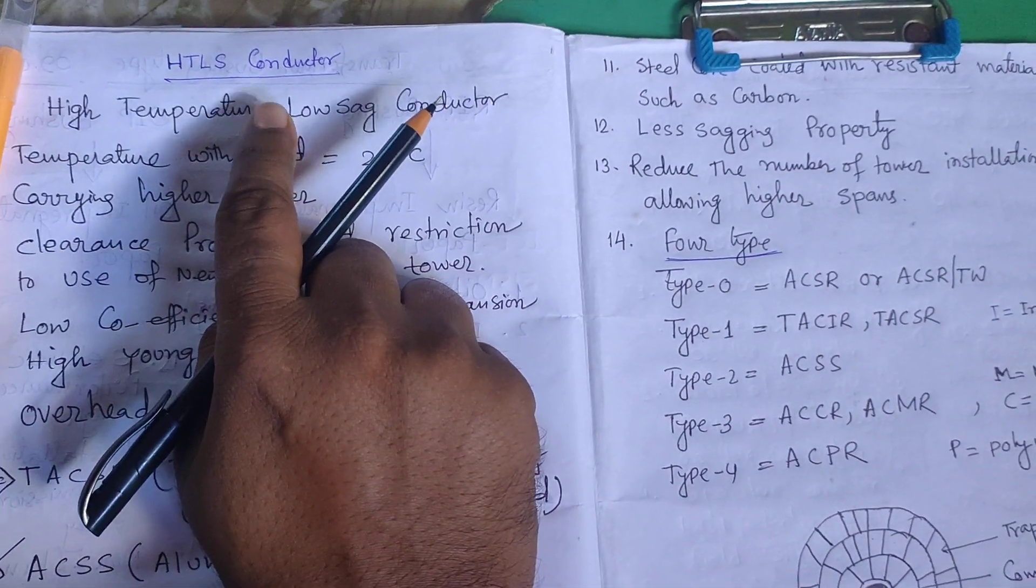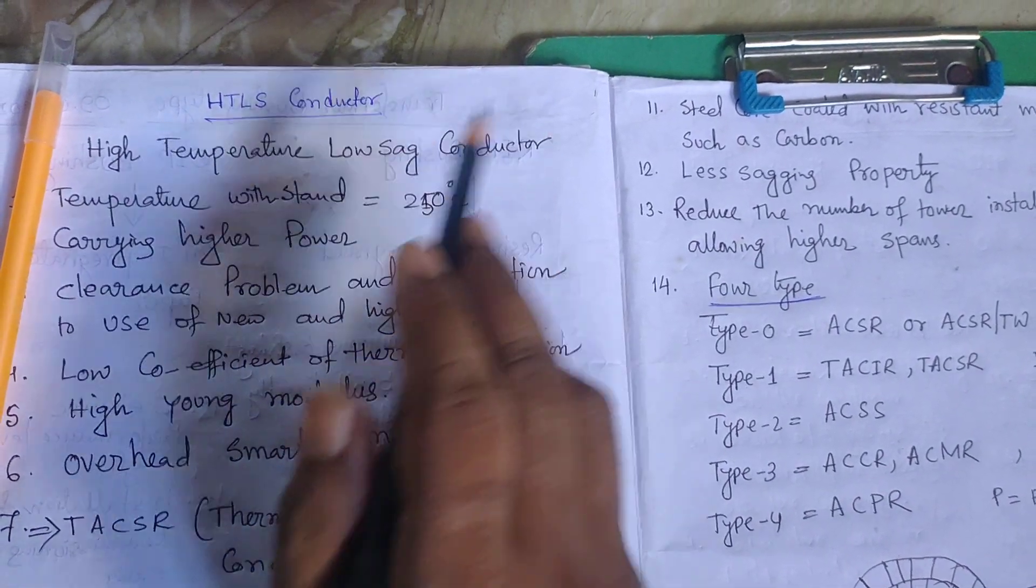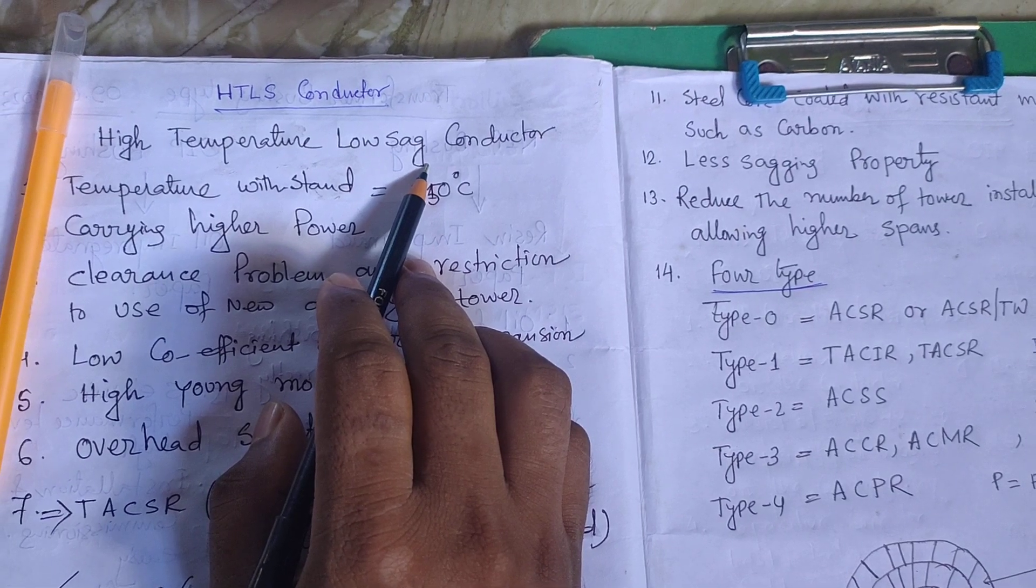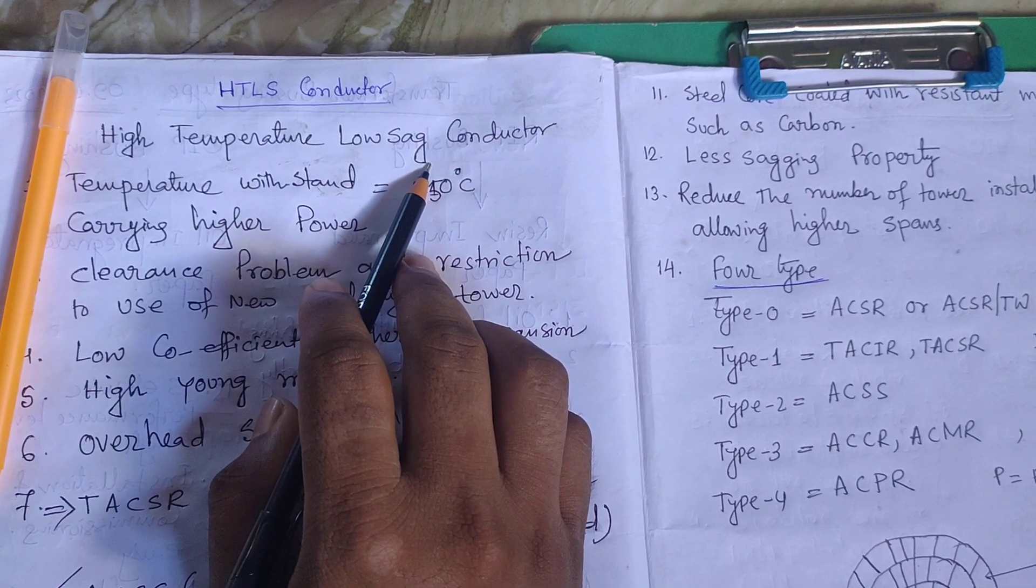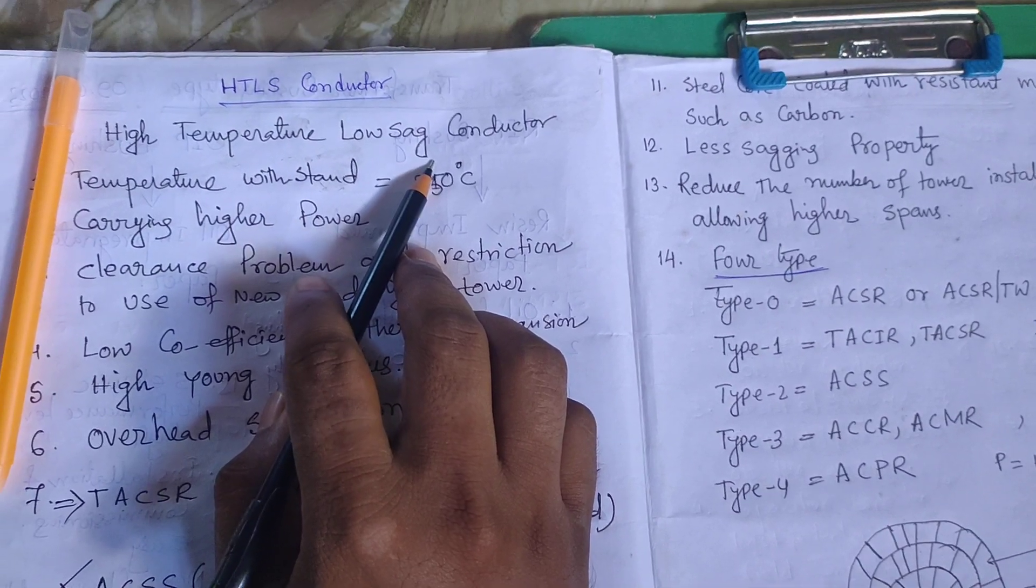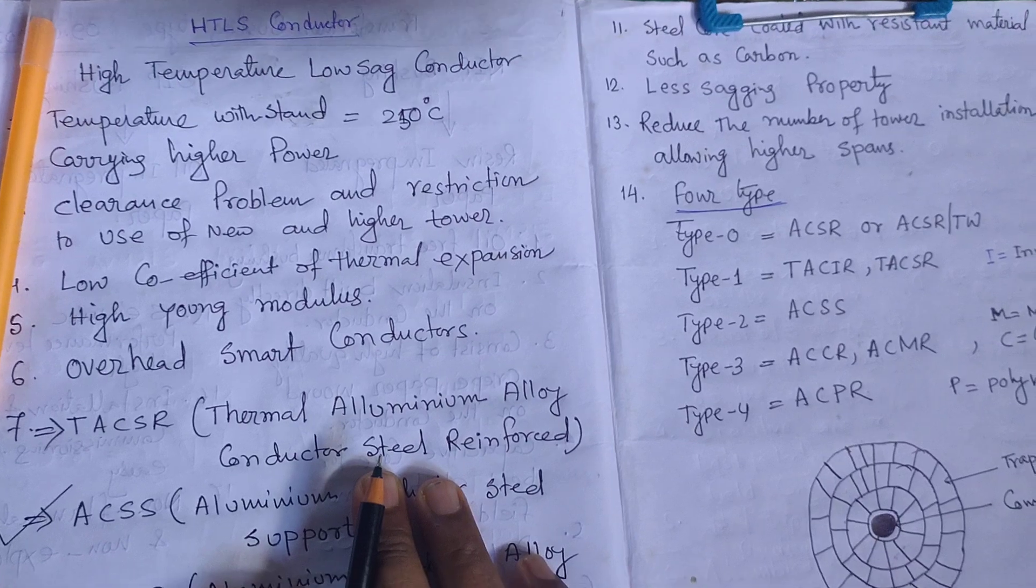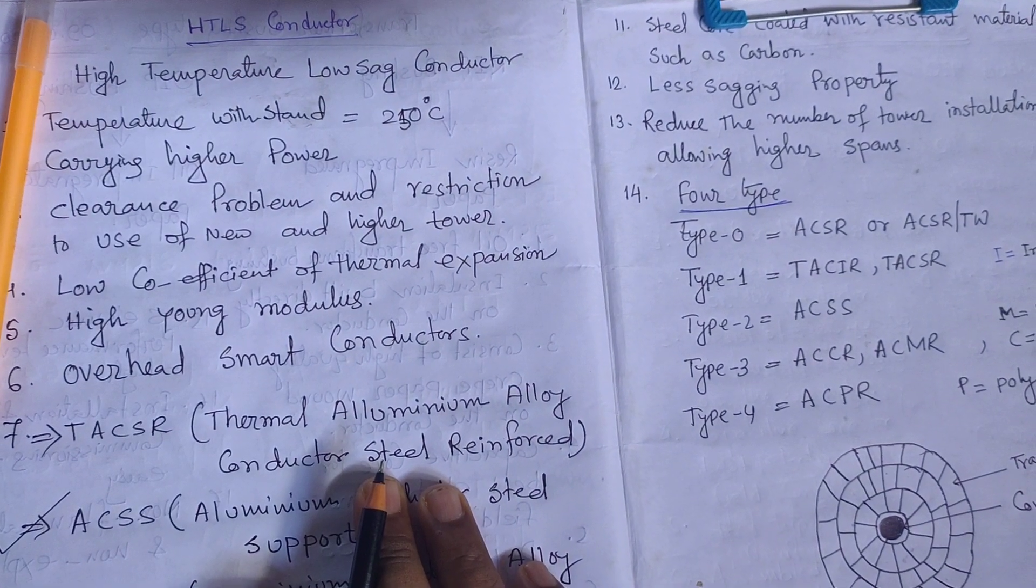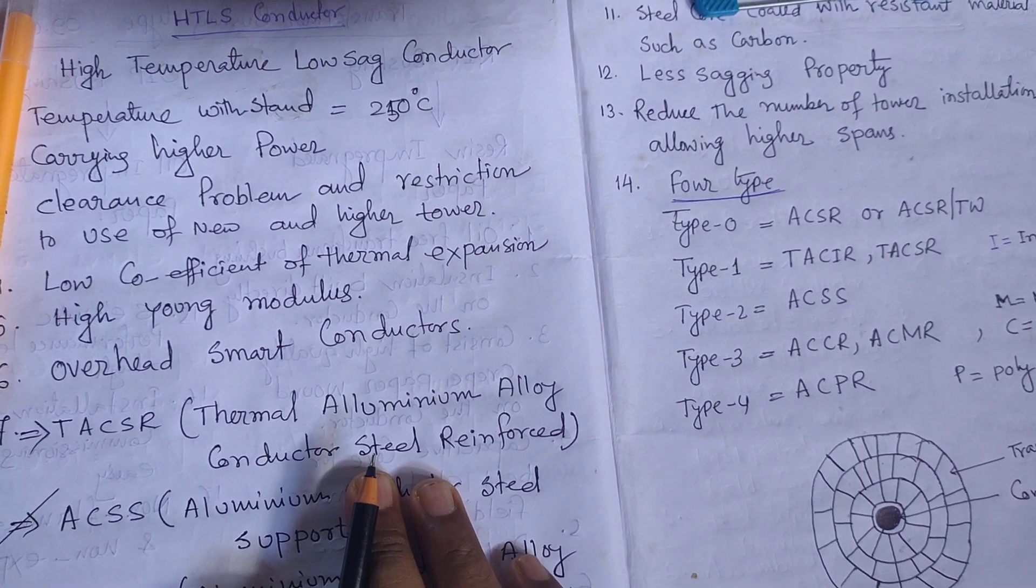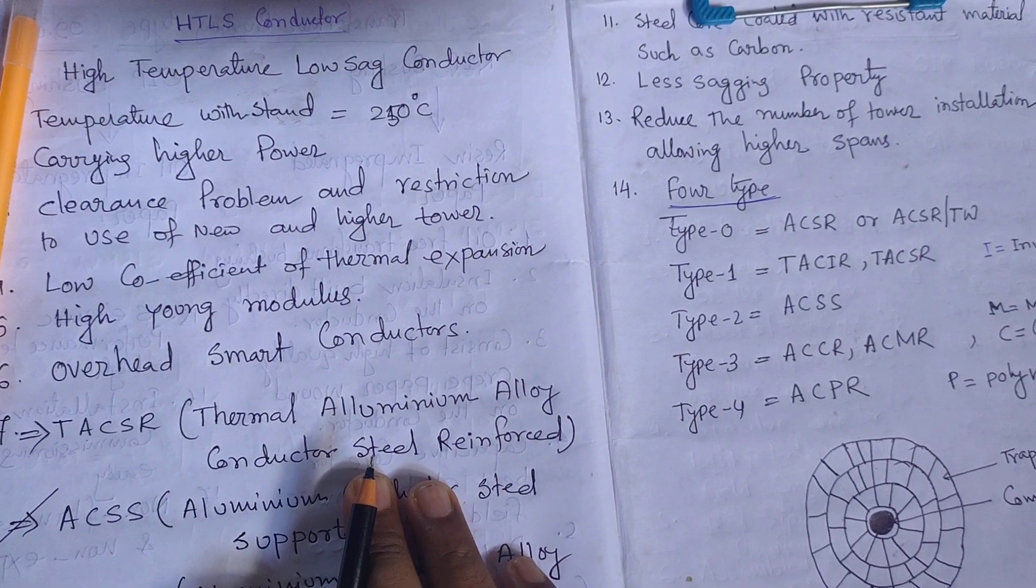The name itself - HTLS - means High Temperature Low Sag Conductor, so no sagging problems. Clearance problems of ACSR Zebra or Panther conductors will be solved. HTLS conductor is the most important conductor nowadays for society and for our present load requirements.